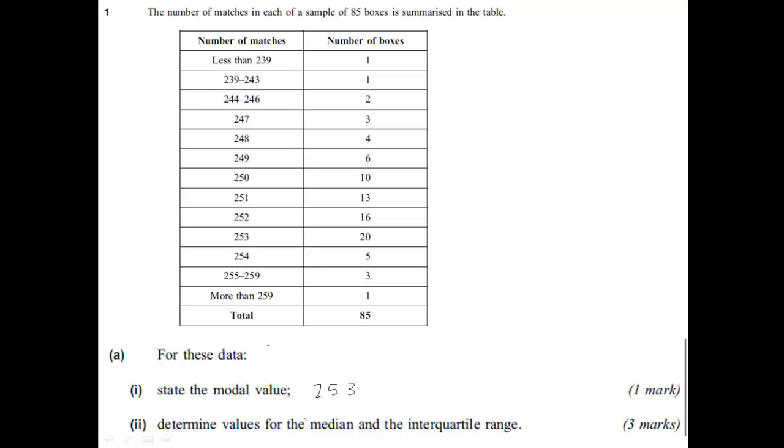The next part asks you to determine the values for median and interquartile range. Well, the median is the middle value. We have 85 boxes. We use a little formula here. The median occurs and if we add 1 to n, which in this case is 85, and divide by 2, we get 86 over 2, which gives us 43. So it is the 43rd box that the median will be in.